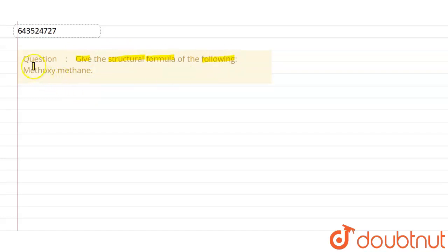So what is methoxy methane? Methane means we will have one carbon, and methoxy - again 'meth' is there - so we will have another carbon.